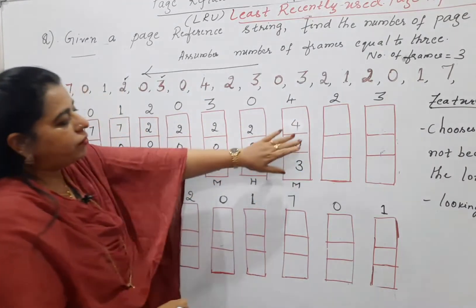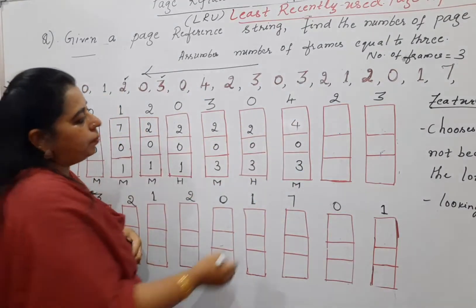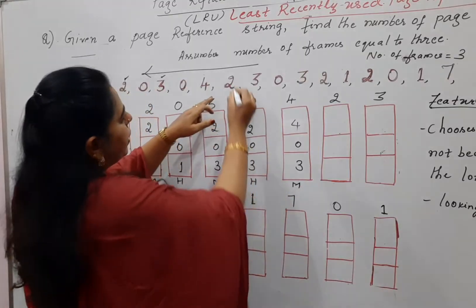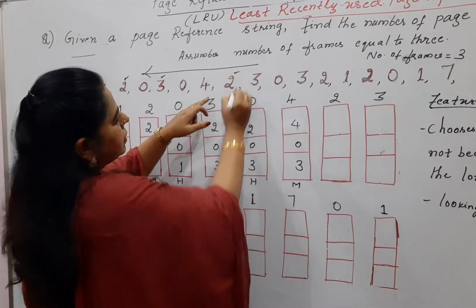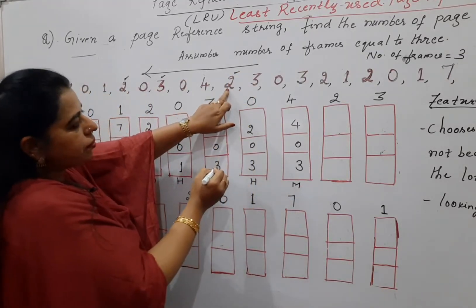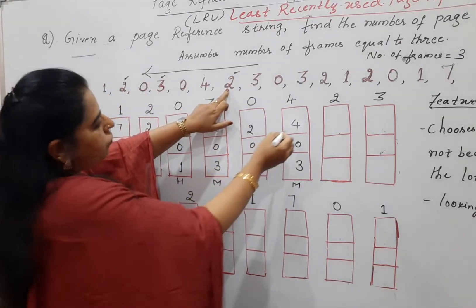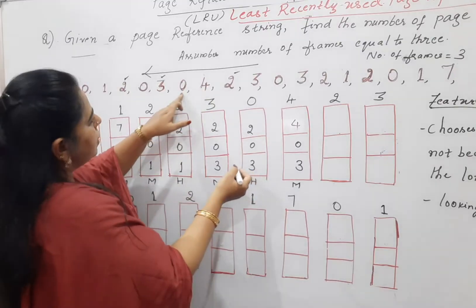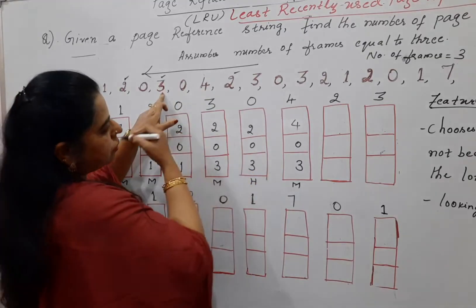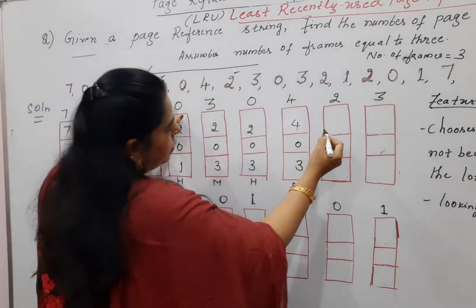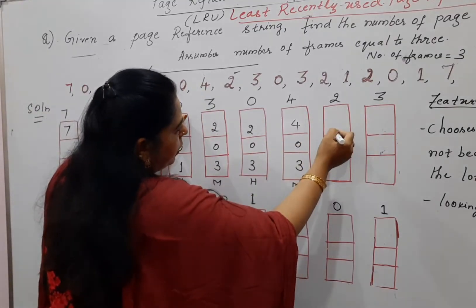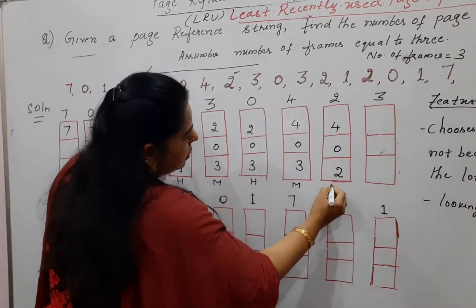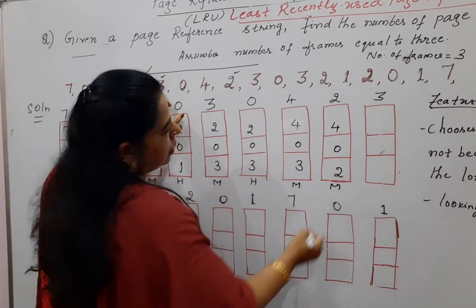Next is page two — you must replace one of the three frames. Looking backward in the reference string, the frames hold four, zero, and three. Three was used long ago, so you replace three, giving frames four, zero, and two. This was a miss.